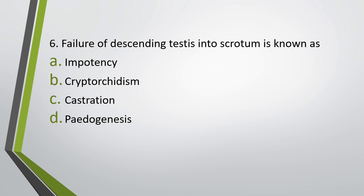Question number six. Failure of descending testis into scrotum is known as: impotence, cryptorchidism, castration, or pedogenesis. Correct answer is option B — cryptorchidism.